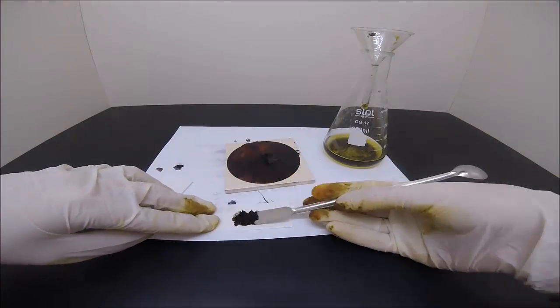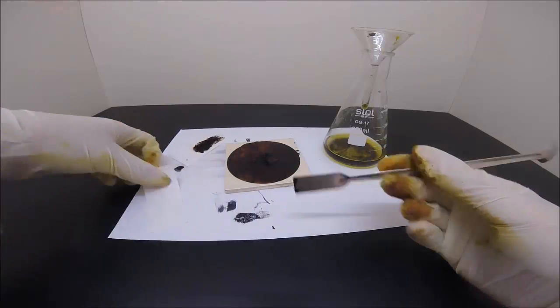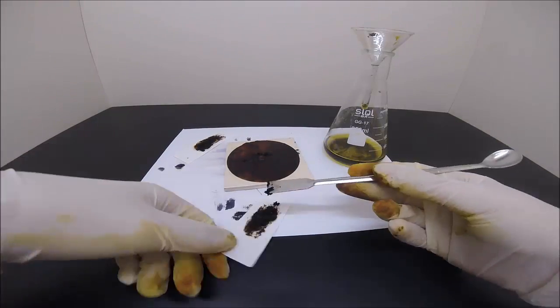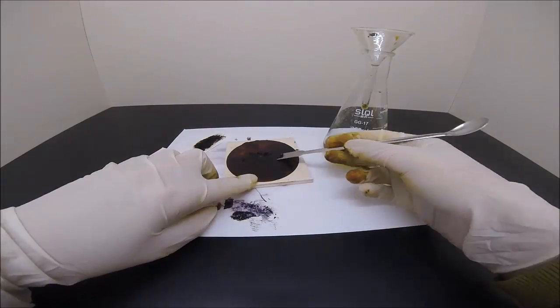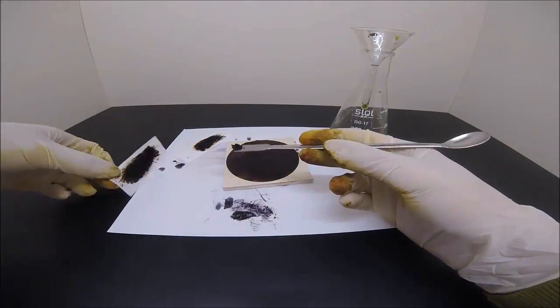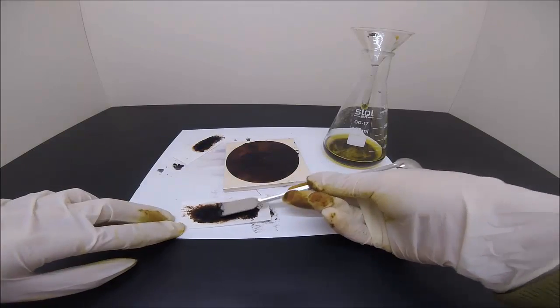Then I used a spatula to divide this batch into several parts. It is very important to evenly spread the nitrogen triiodide on a flat surface like a piece of paper. Due to its extreme sensitivity, it may detonate even by its own weight.